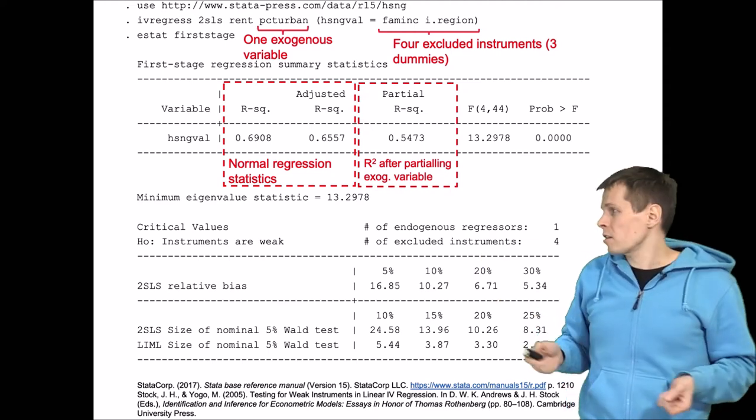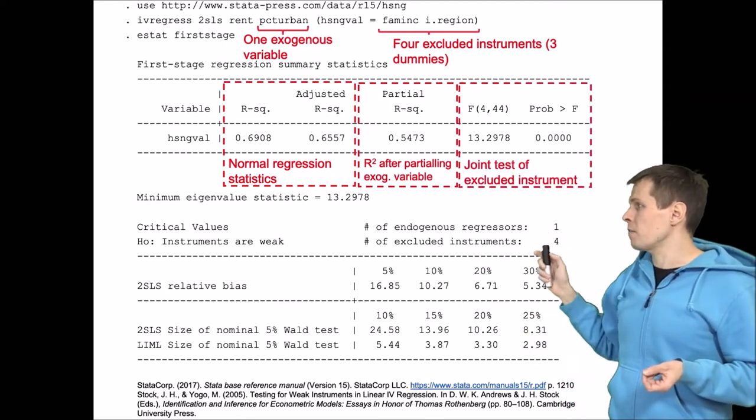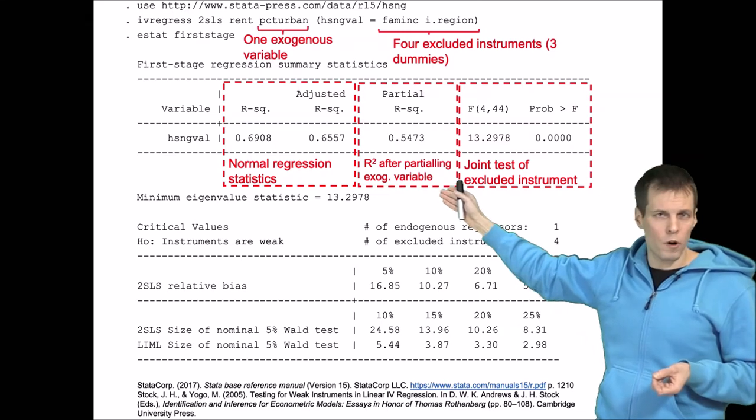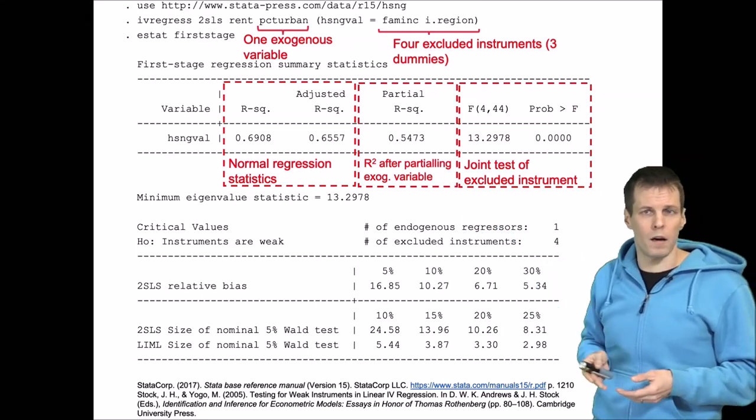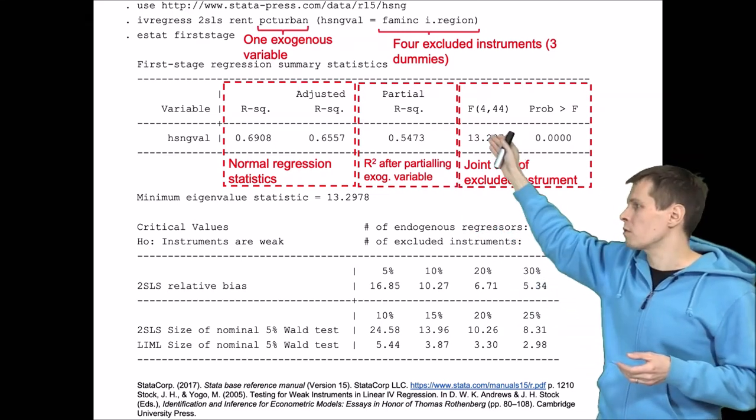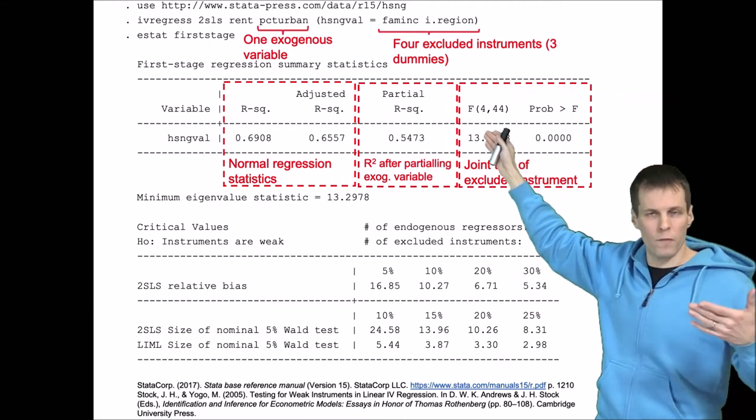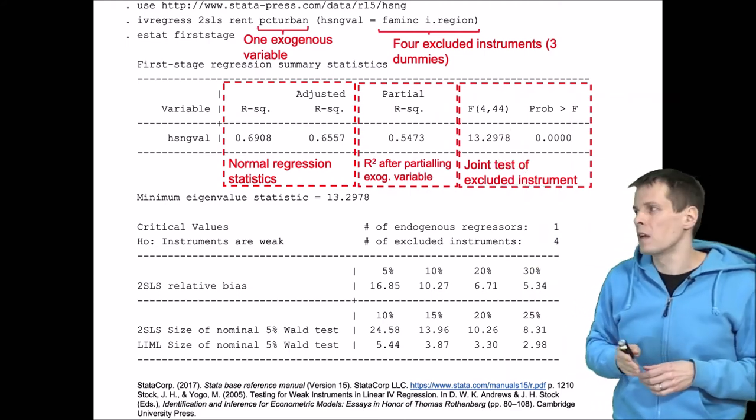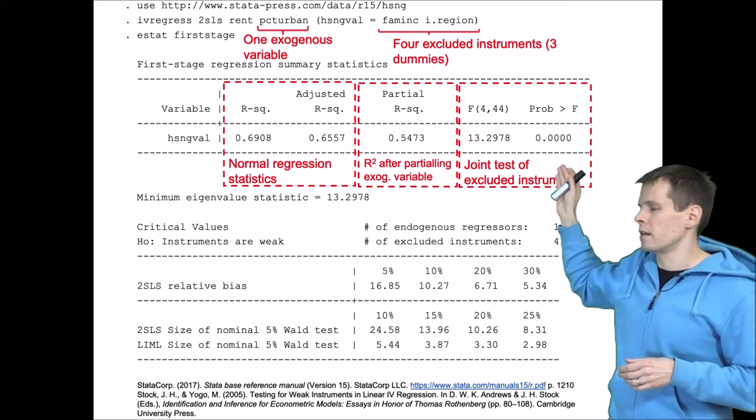And then there's a test, and this test here is an F test for this partial R-square being zero. And we can see it has four degrees of freedom, that's the number of variables. So we have four excluded instruments and 44 is the sample size. The F test is highly significant.